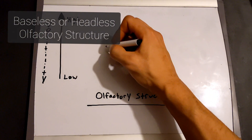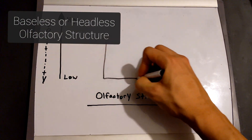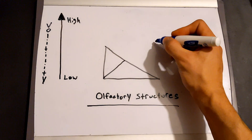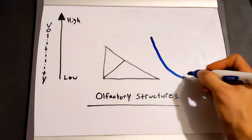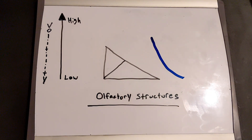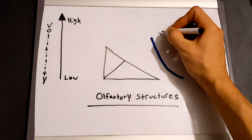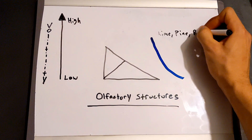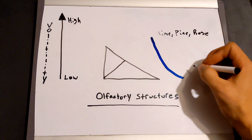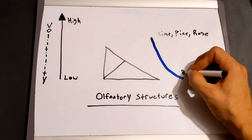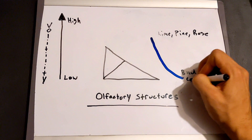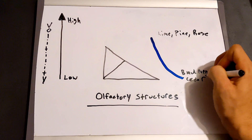Next we have a baseless or headless structure. This structure is pretty straightforward — it either doesn't have a head or it doesn't have a base. An example of this would be lime, pine, and rose, or black pepper, cedar, and vanilla.